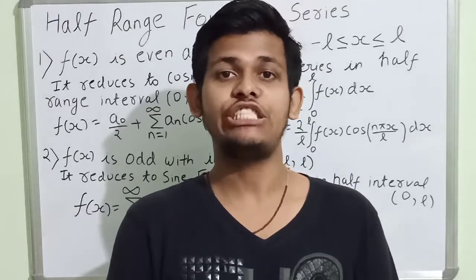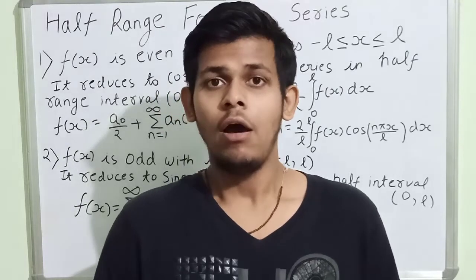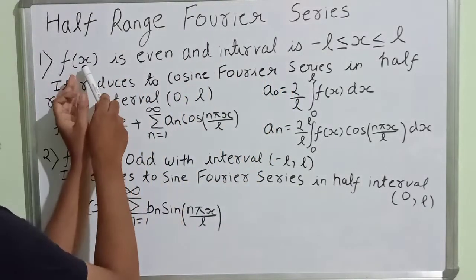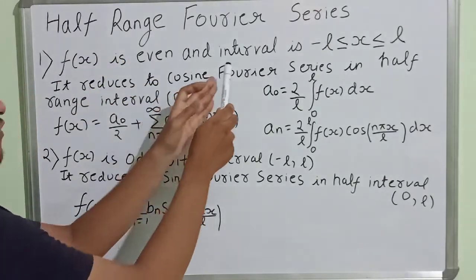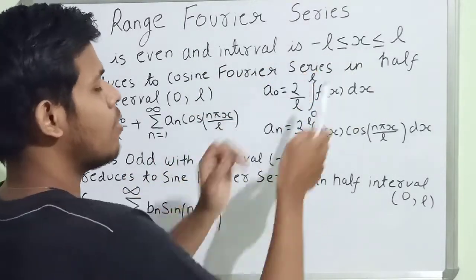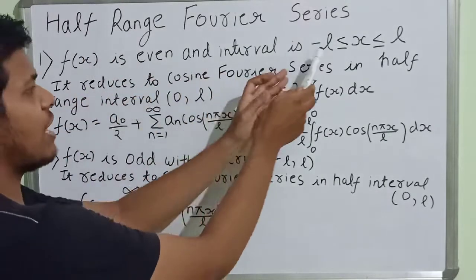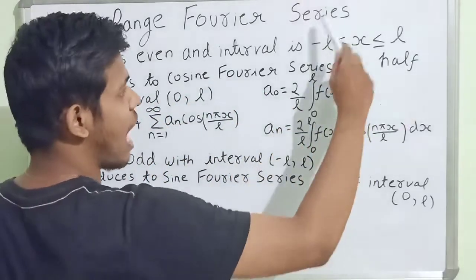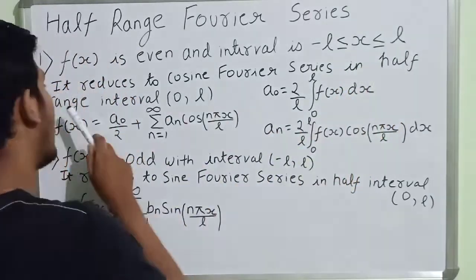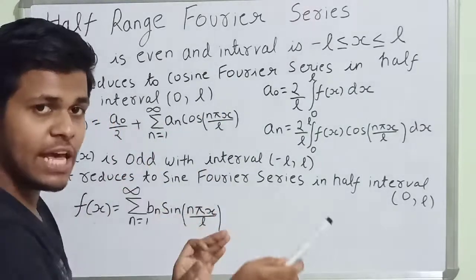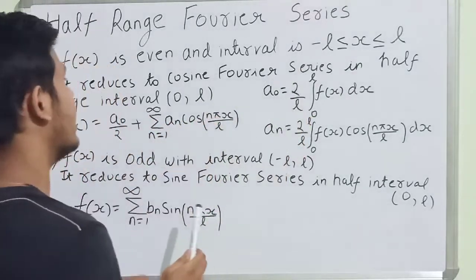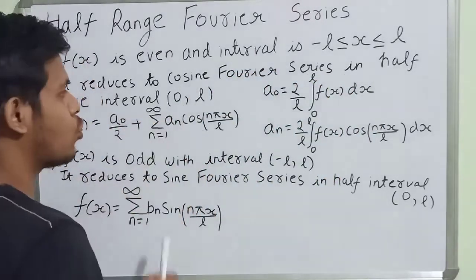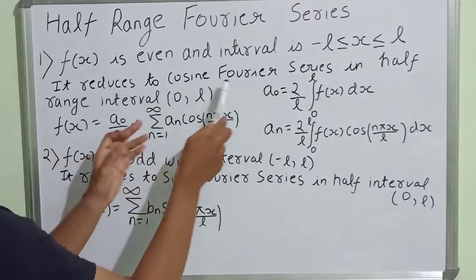Hello friends. In this video lecture we are going to study about half-range Fourier series, and we will also study about cosine and sine Fourier series. Suppose we have a function f(x) which is even, defined on the interval minus l to plus l. Since the function is even on the interval minus l to l, we can take the half interval 0 to l and call it the half-range interval. The Fourier series determined on this half-range interval is called the cosine Fourier series.